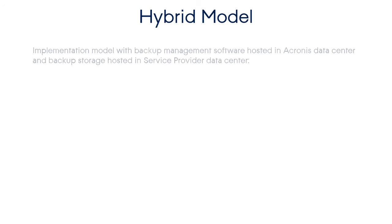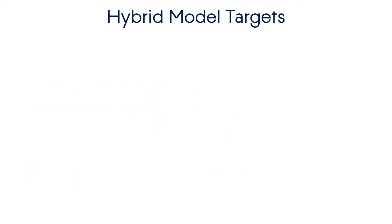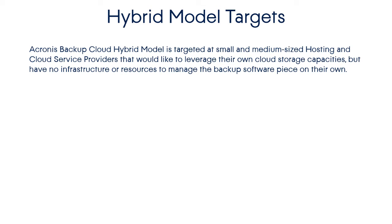Now let's take a look at the hybrid model. Since backup storage is hosted in the service provider's data center, there are no upfront storage costs. Moreover, the service provider has full control over their storage. This model can be implemented very fast and can be considered an easy and reliable source of new recurring revenue. The Acronis hybrid model is targeted at small and medium-sized hosting and cloud service providers that would like to leverage their own cloud storage capacities but have no infrastructure or resources to manage the backup software piece on its own.